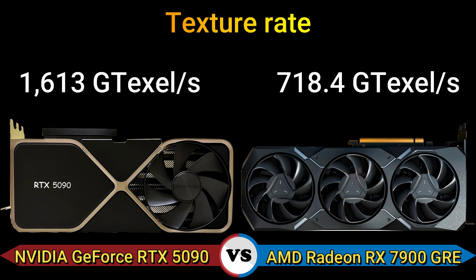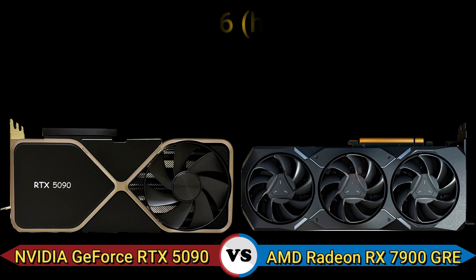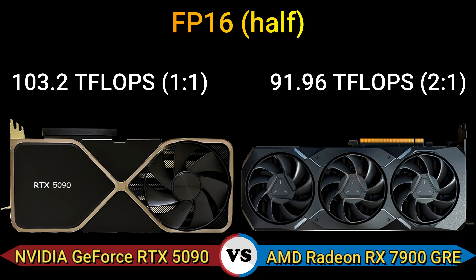Texture rate: 1630 GT/s and 718.4 GT/s. FP16 half precision: 103.2 TFLOPS at 1:1 ratio, and 91.96 TFLOPS at 2:1 ratio.